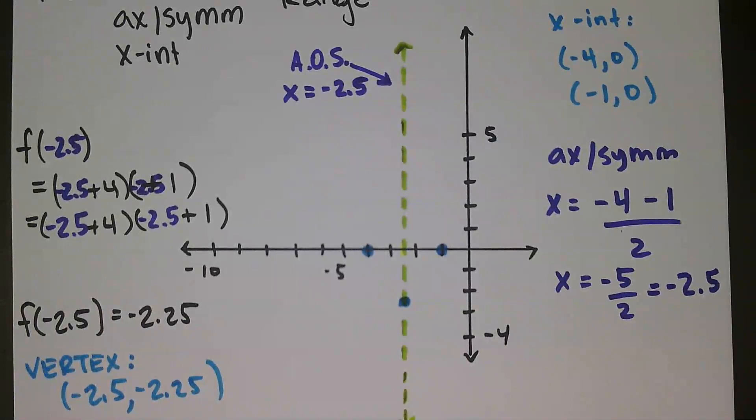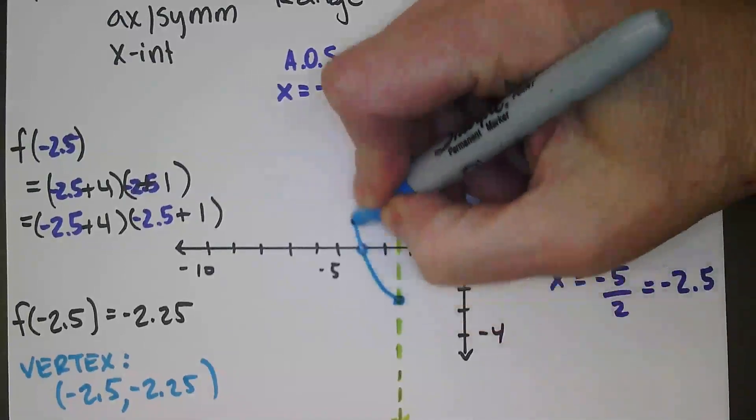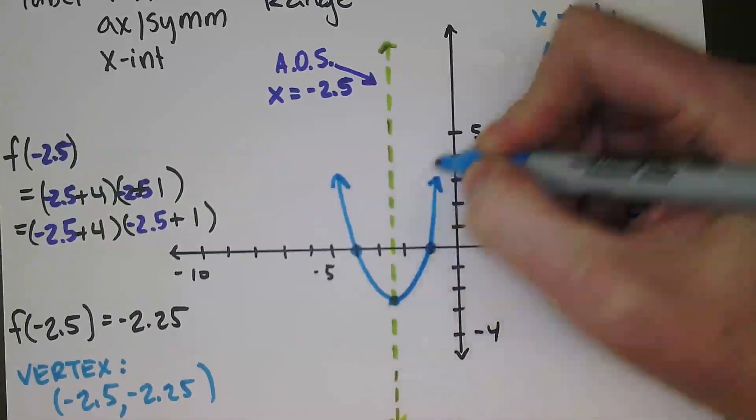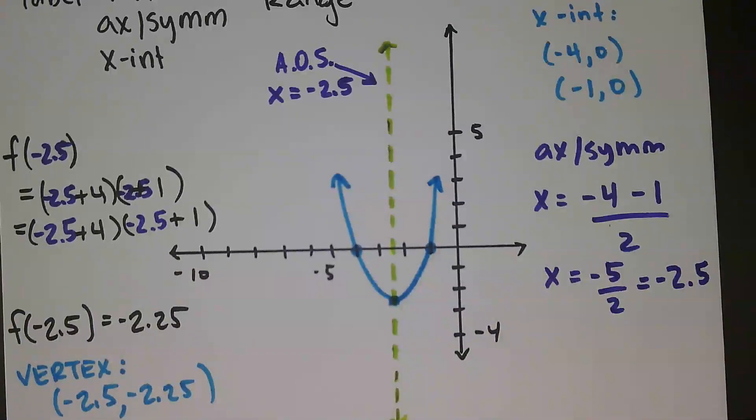So I would probably, at this point, just connect it like this. I know it's going up. Like this. I know it's going up. And that would be a pretty darn decent graph.